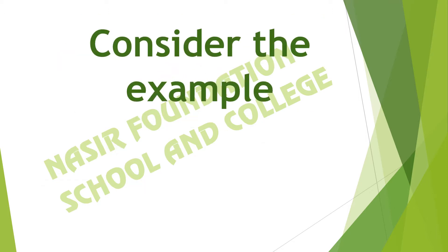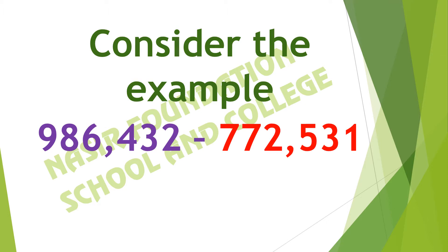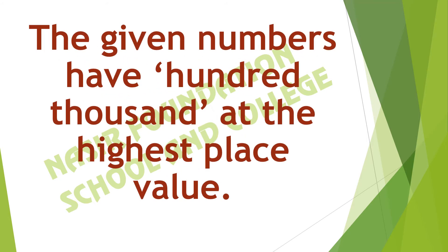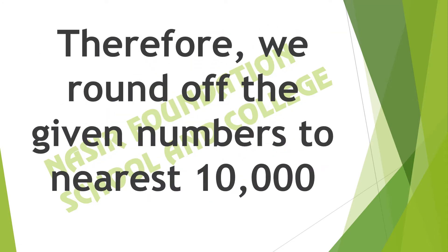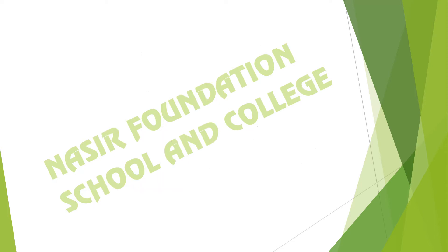Consider the example. Here we have the number 772,531. We have to subtract this number out of 986,432. The given numbers have 100,000 at the highest place value. Therefore we round off the given numbers to the nearest ten thousands. As we have the number 986,432, its highest place value is 100,000, so we will round it off to the next highest value — that is ten thousands.